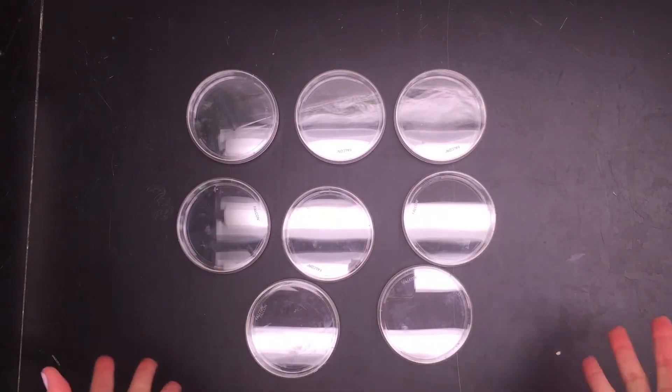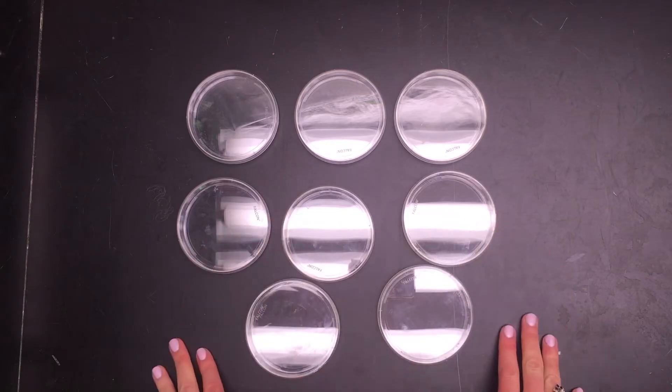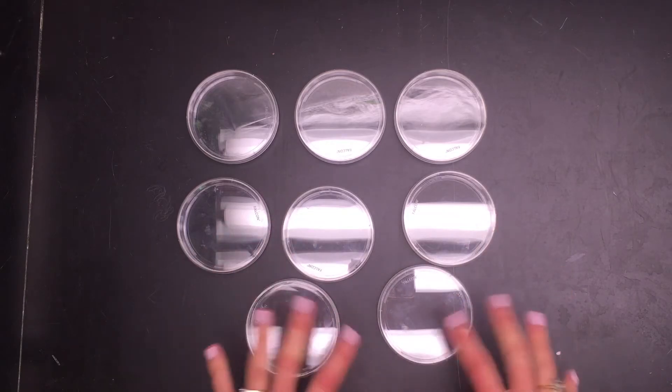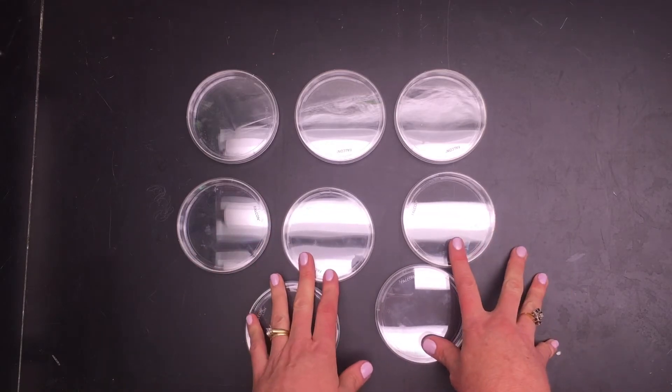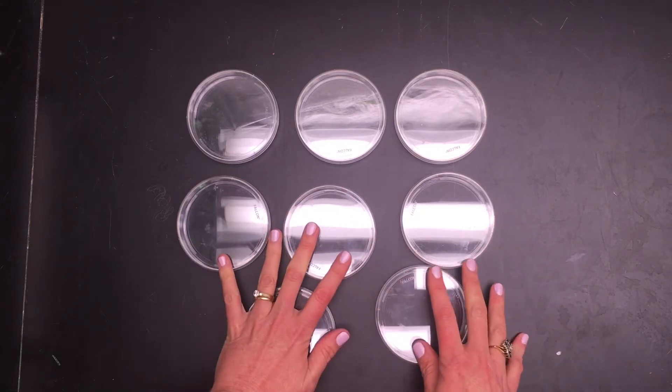You want to use enough petri dishes to get good data, so six to eight petri dishes are a good idea just to make sure that you have enough data to draw some conclusions and to really test if your hypothesis was correct or not.